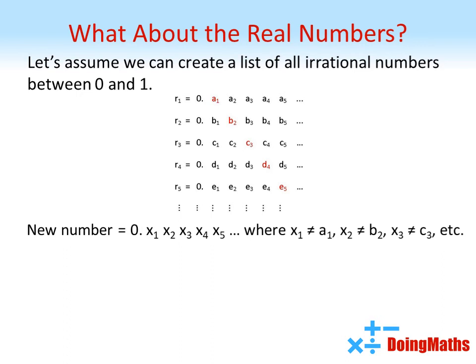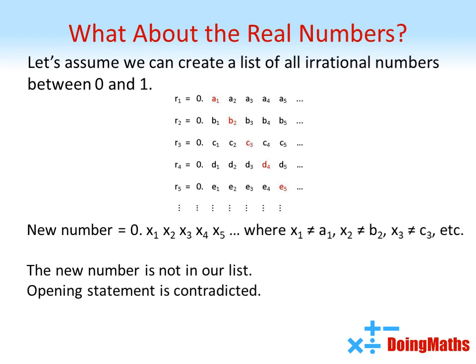As this new number differs from each number in our original list in at least one decimal place each time, it can't be contained in our original list. This means by contradiction it's therefore impossible to list all of the irrational numbers between zero and one, therefore no bijection exists and the sets are different sizes. We call this the diagonal argument due to our chosen digits forming a diagonal on the diagram, as you can see in red.